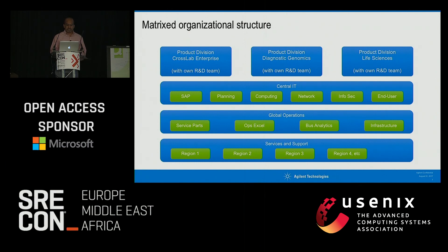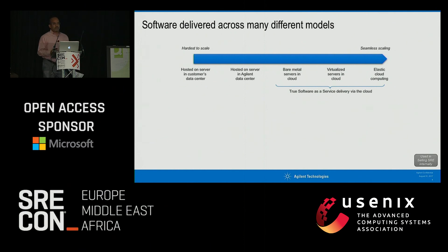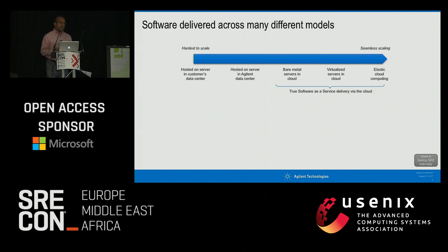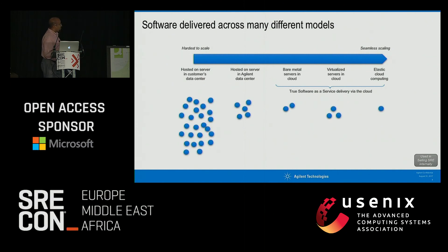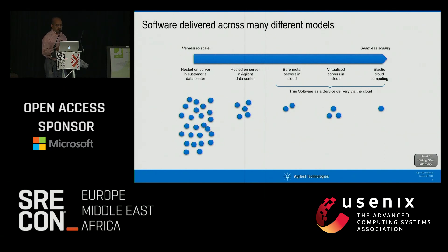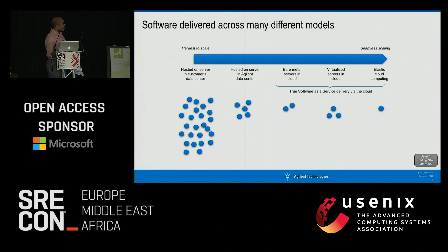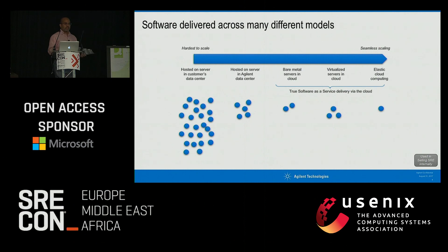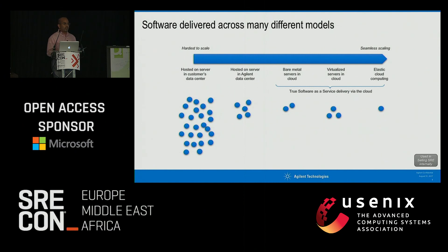Where this becomes challenging is: where does one think about putting an SRE concept? That's one of the first challenges we faced. The second challenge was our software delivery model. Most of our software is actually being deployed at a customer's data center — you can think of the old style of literally mailing CDs. A little is hosted in our own data centers, and we're starting to see more true software-as-a-service in the cloud.